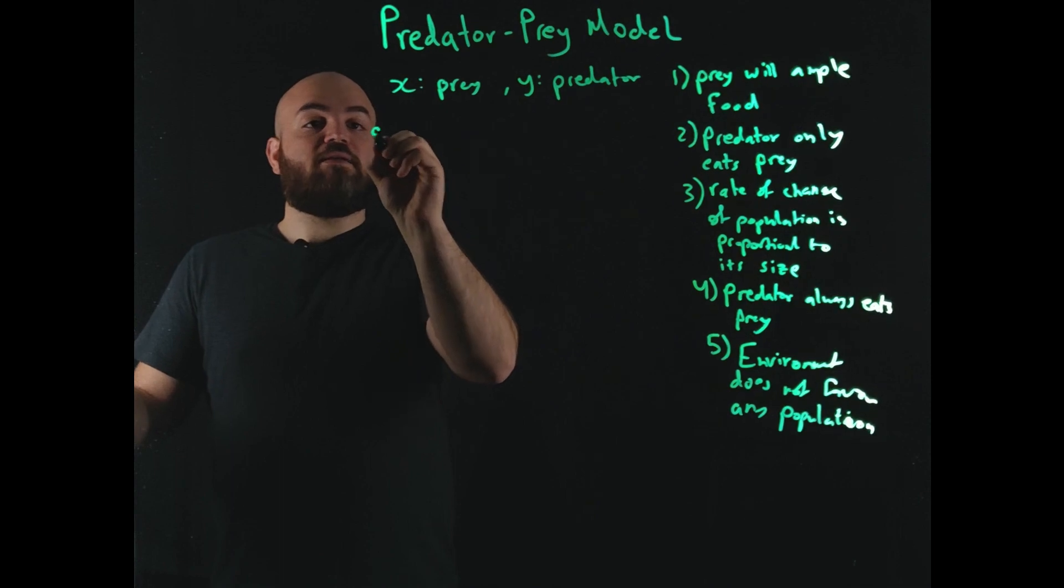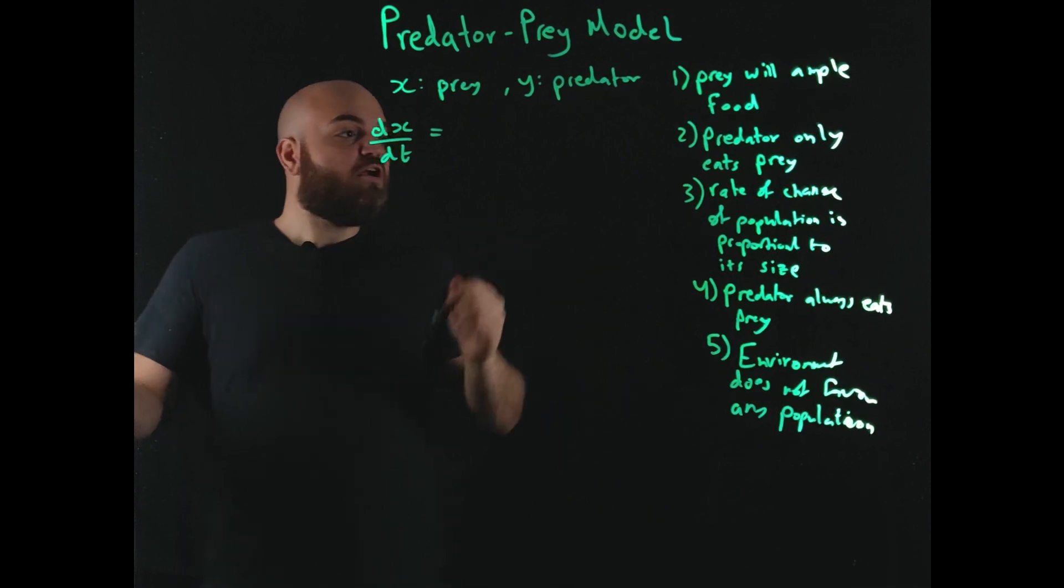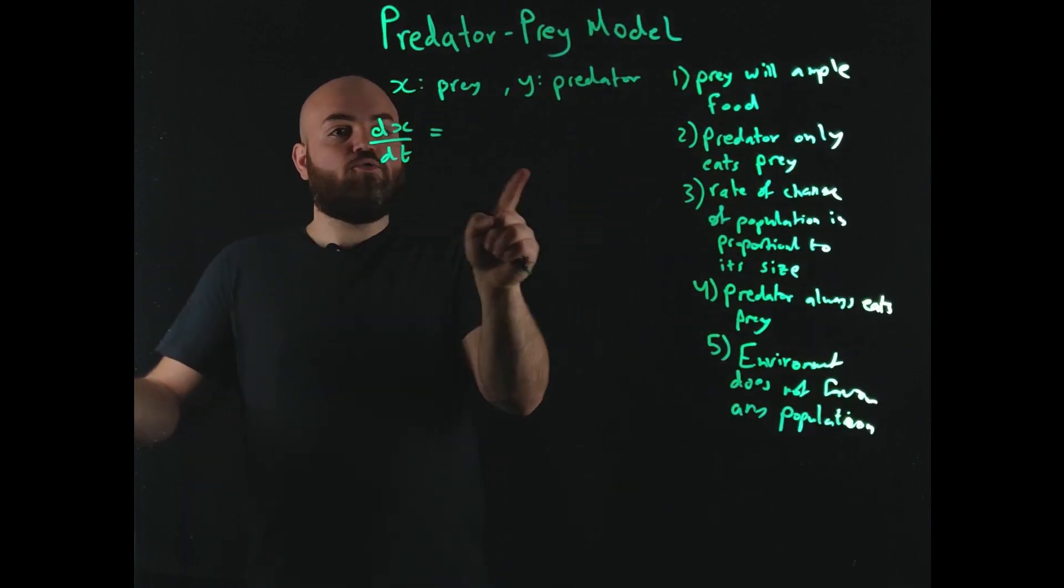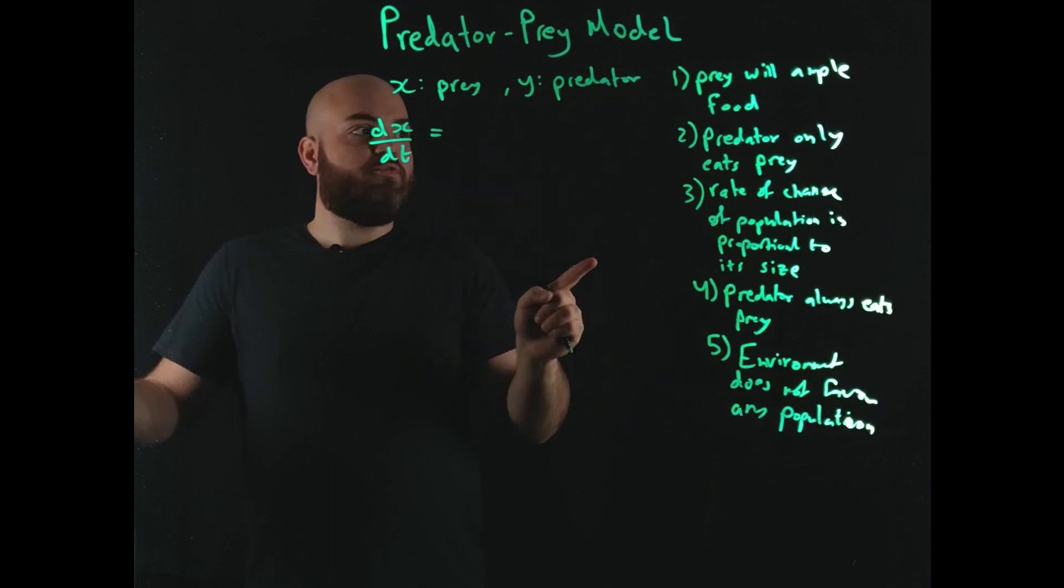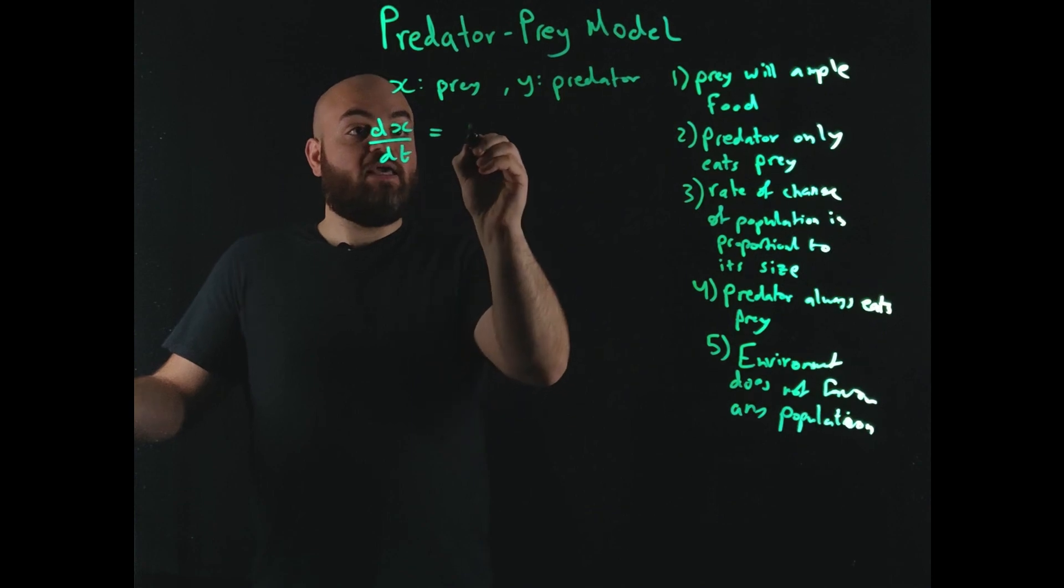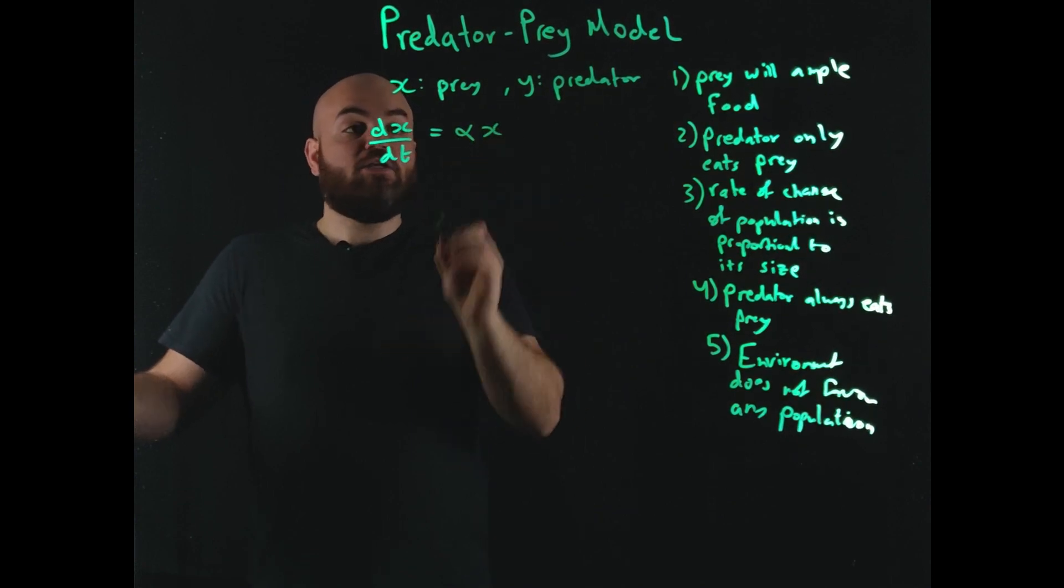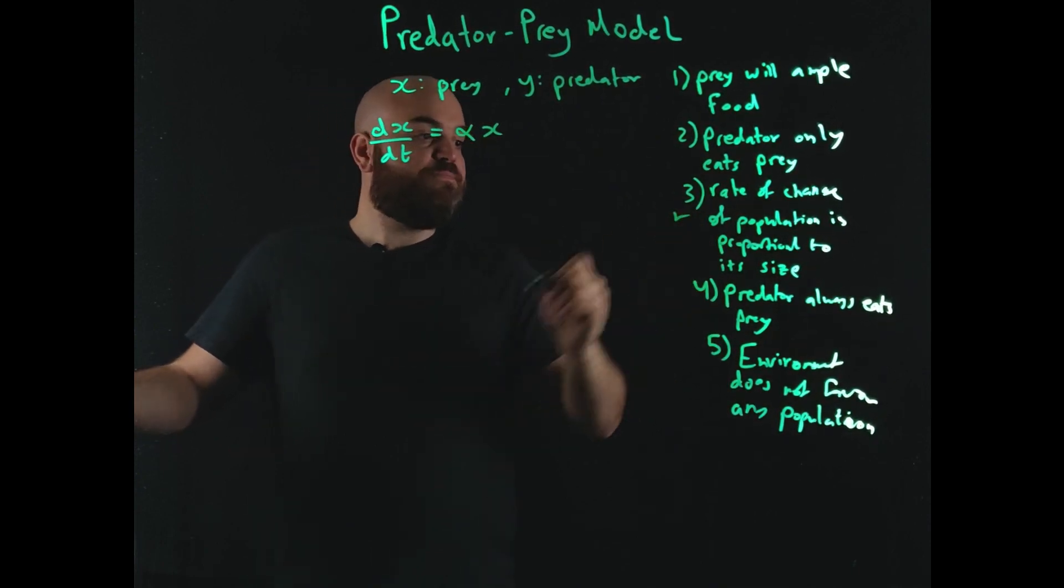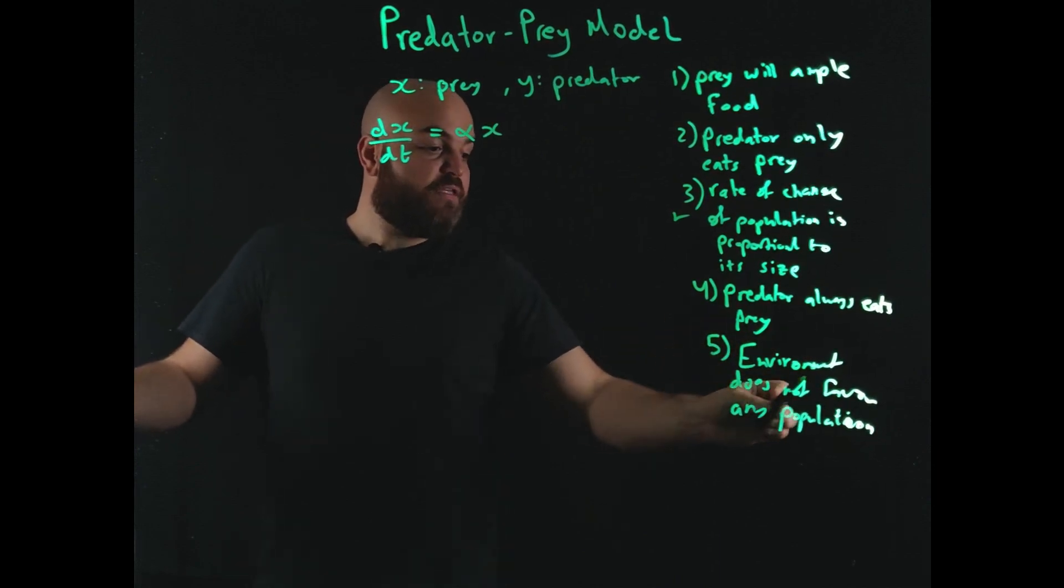So let's say that dx/dt is going to change over time. So let's start out with our assumptions. It has ample food, so we don't need to, for the prey, have any term for food. It also, its rate of change is proportional to its size. So that's, we can get that: alpha X. So alpha is a constant, the proportional constant. X is the size itself, so the rate of change is proportional to its size. So check on this one. Now the predator, not talking about that, now the environment doesn't change in any way. Okay.